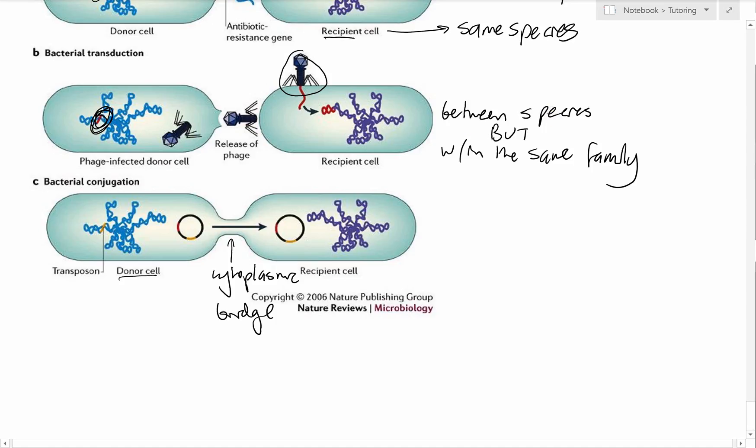We said that the phage can infect between species but has to be within the same family. The bridges mean that if this is family A species A, and this is family A species B, this guy here can be family A species A, and this one here can be family B species B again.